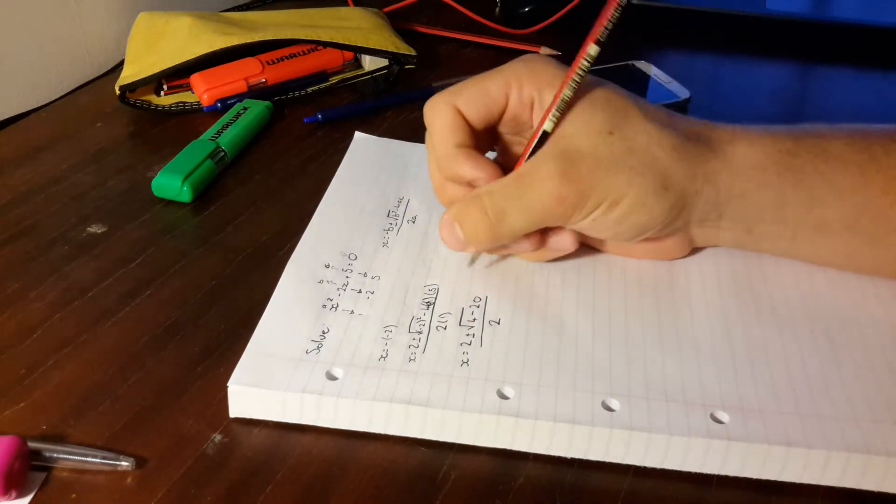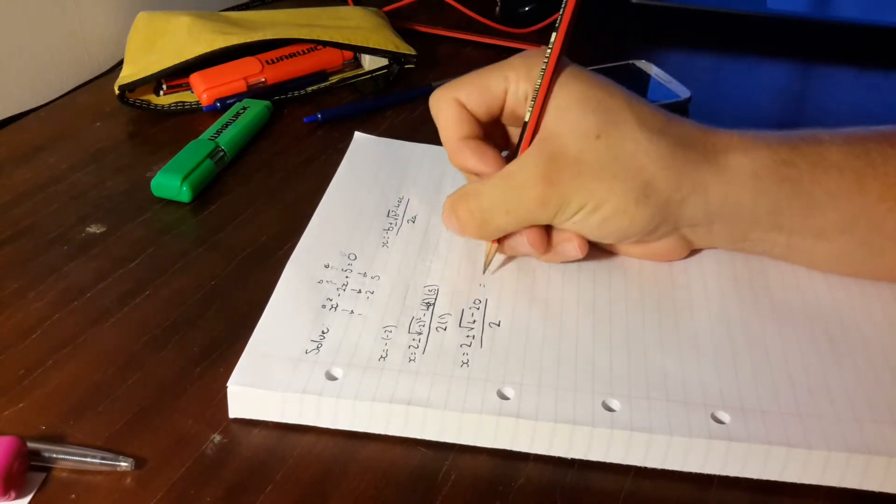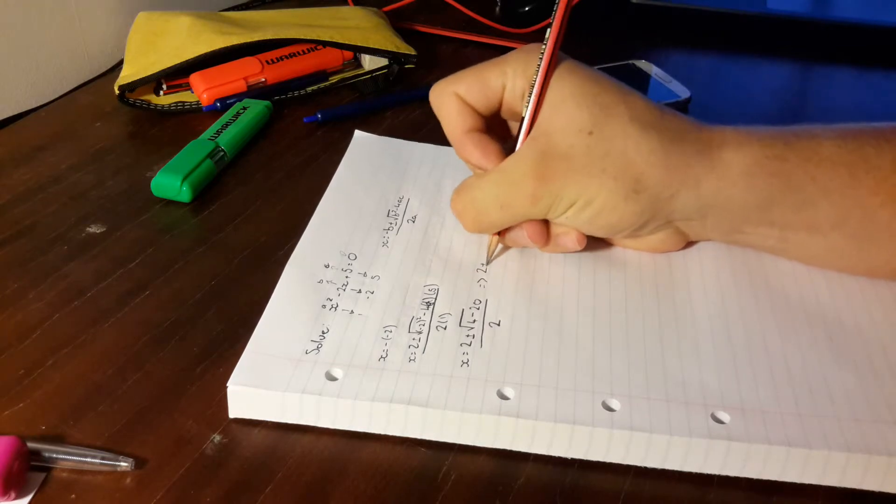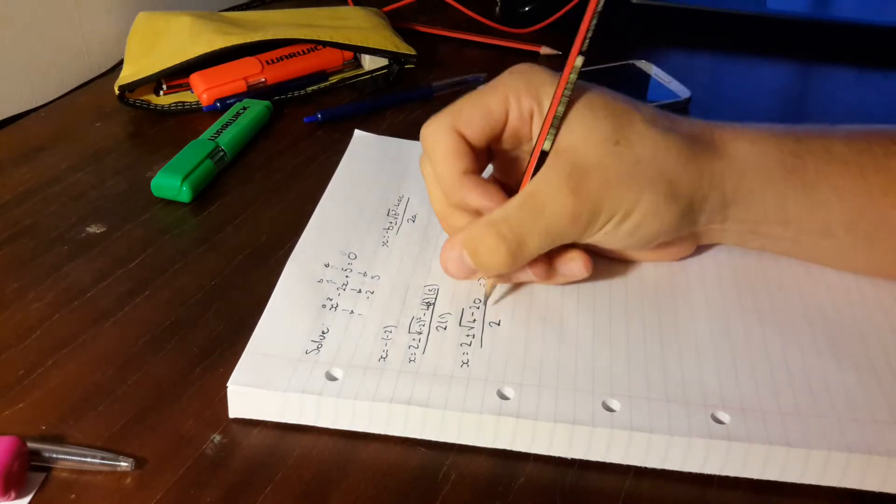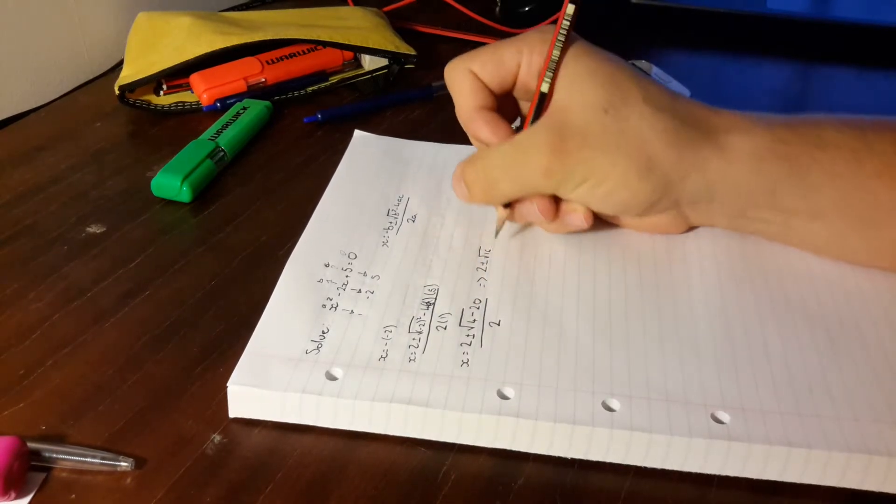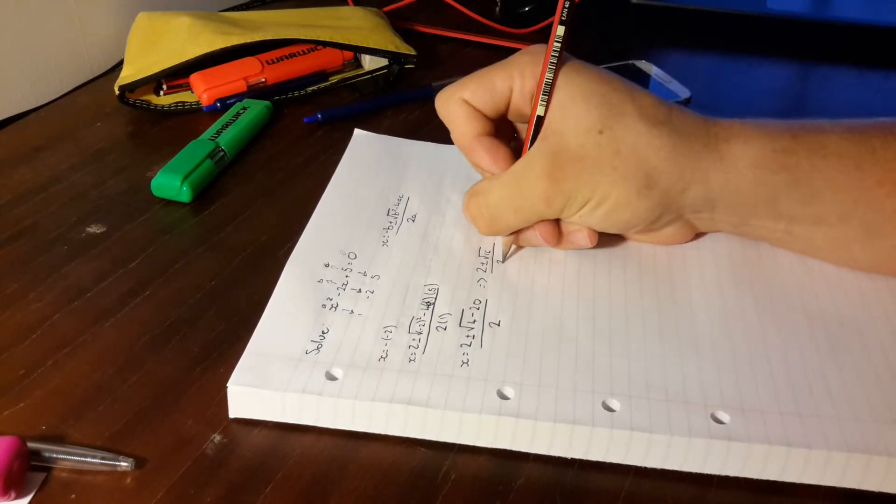So if we want to simplify that even more, we go 2 plus or minus the square root of 4 minus 20, which is 16, over 2.